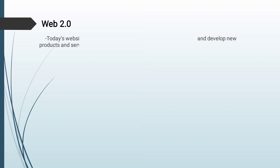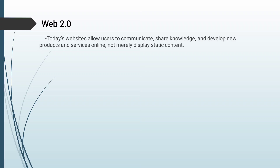Web 2.0 describes the second generation of interactive internet-based services. Today's websites allow users to communicate, share knowledge, and develop new products and services online. You've probably used Web 2.0 services if you've uploaded photographs to Flickr or another photo-sharing website, pinned to Pinterest, uploaded a video to YouTube, started a blog, or added an app to your Facebook profile. Nowadays we are in this Web 2.0 era — blogging, Facebook, Instagram, and similar platforms.